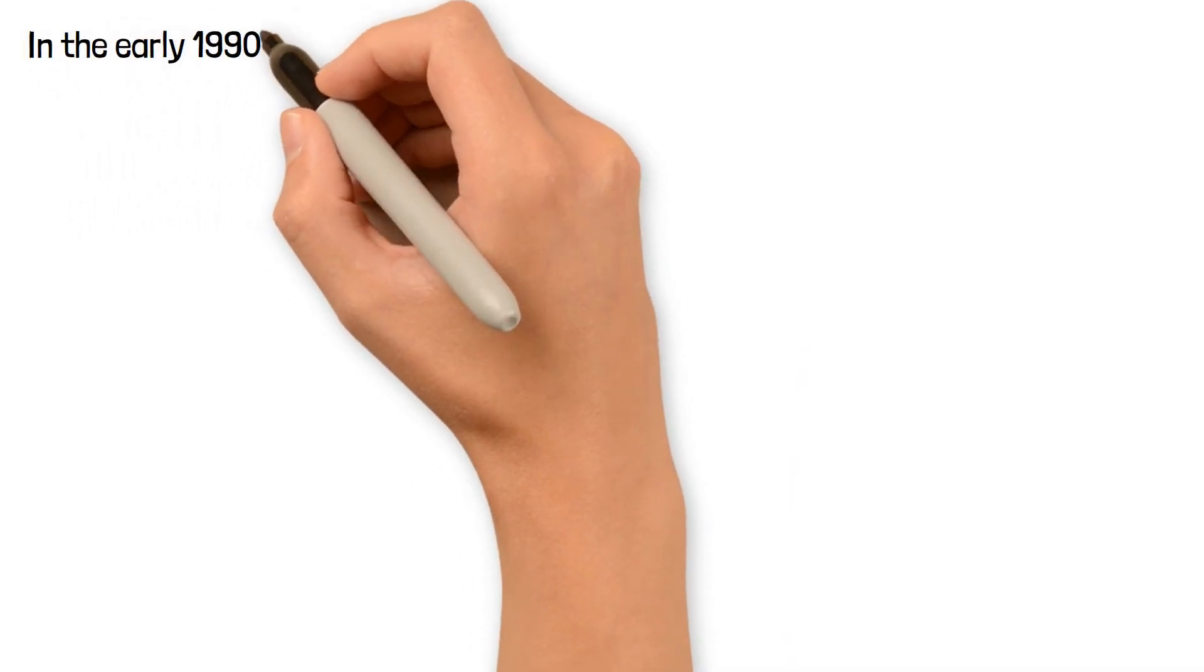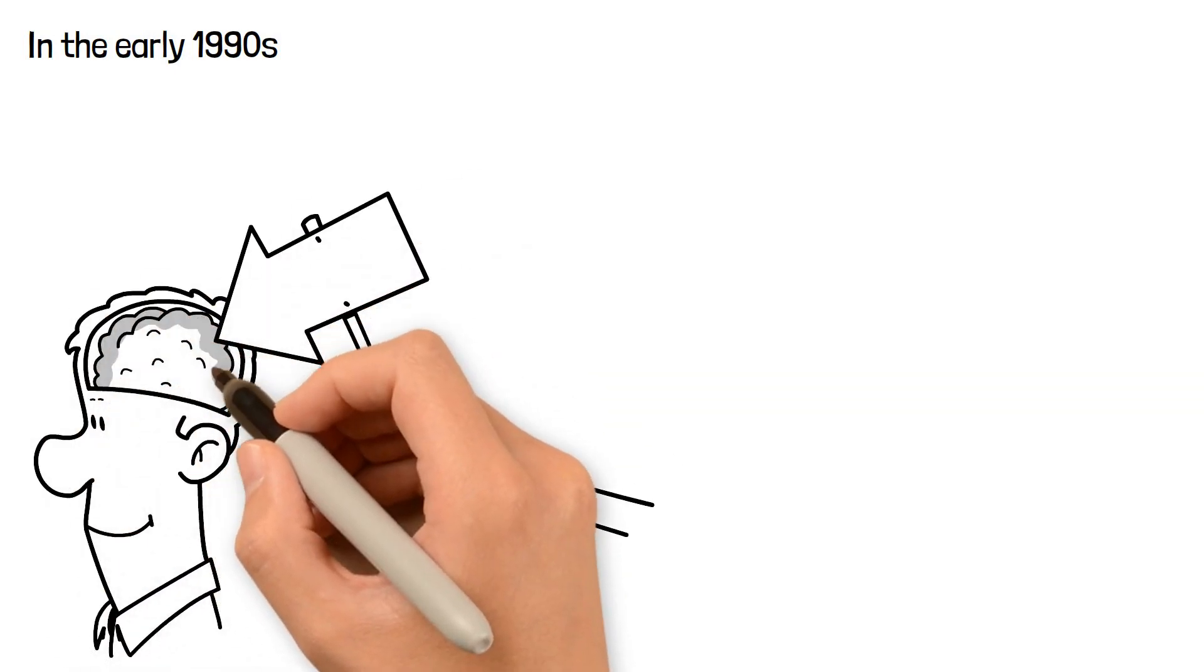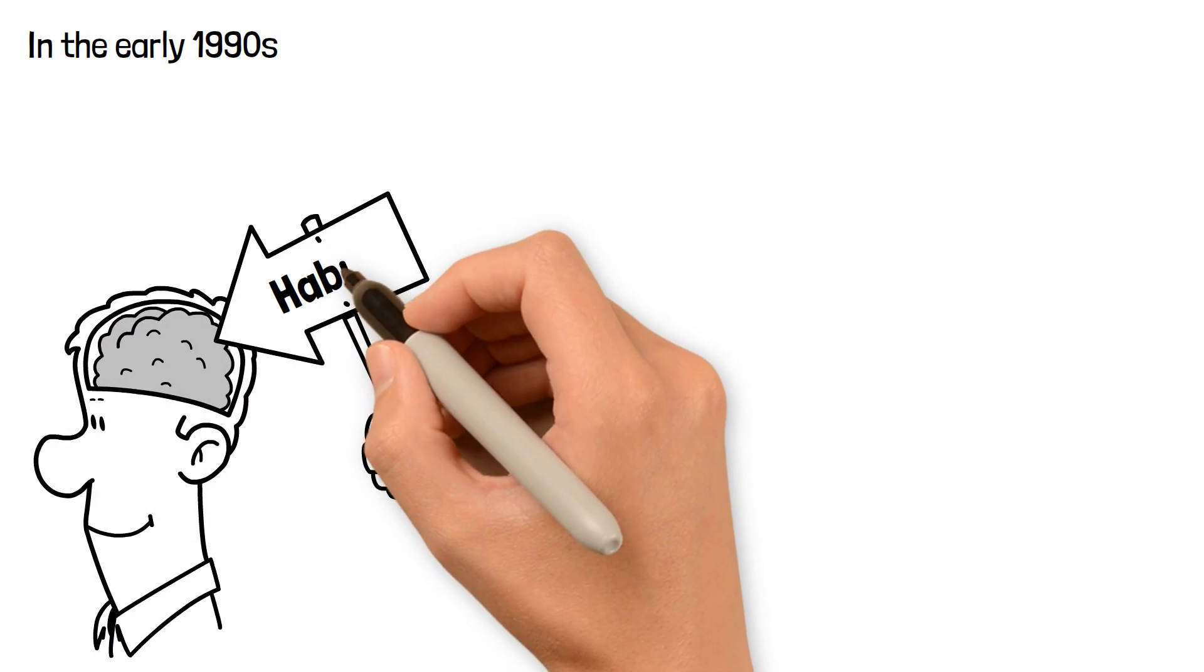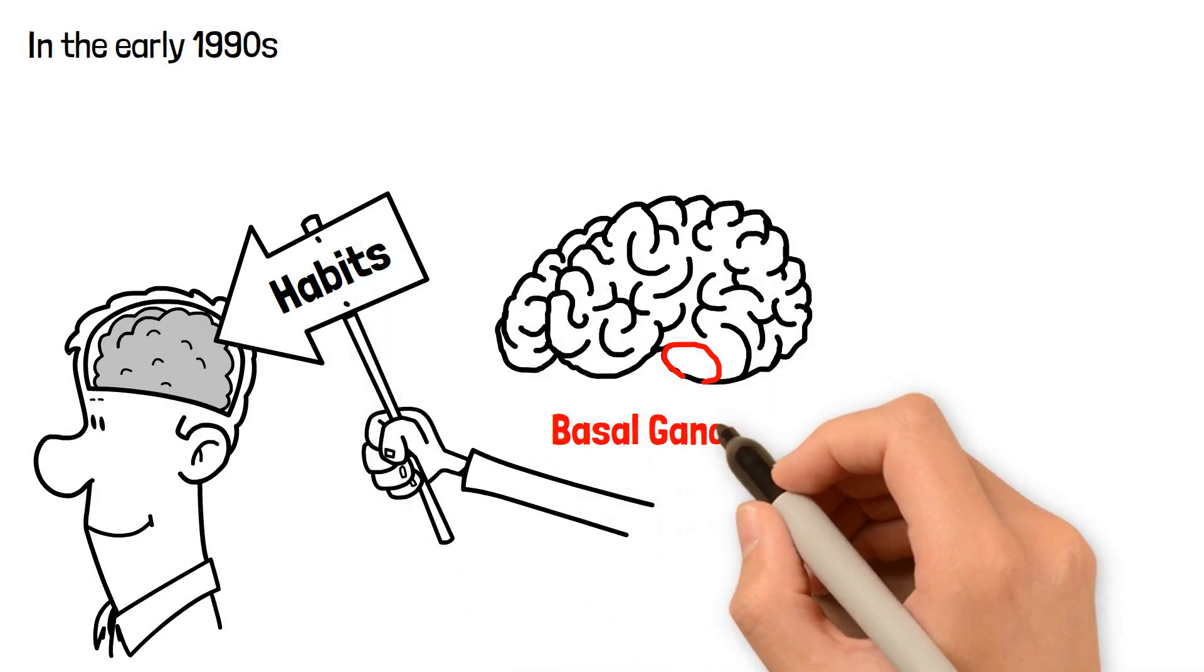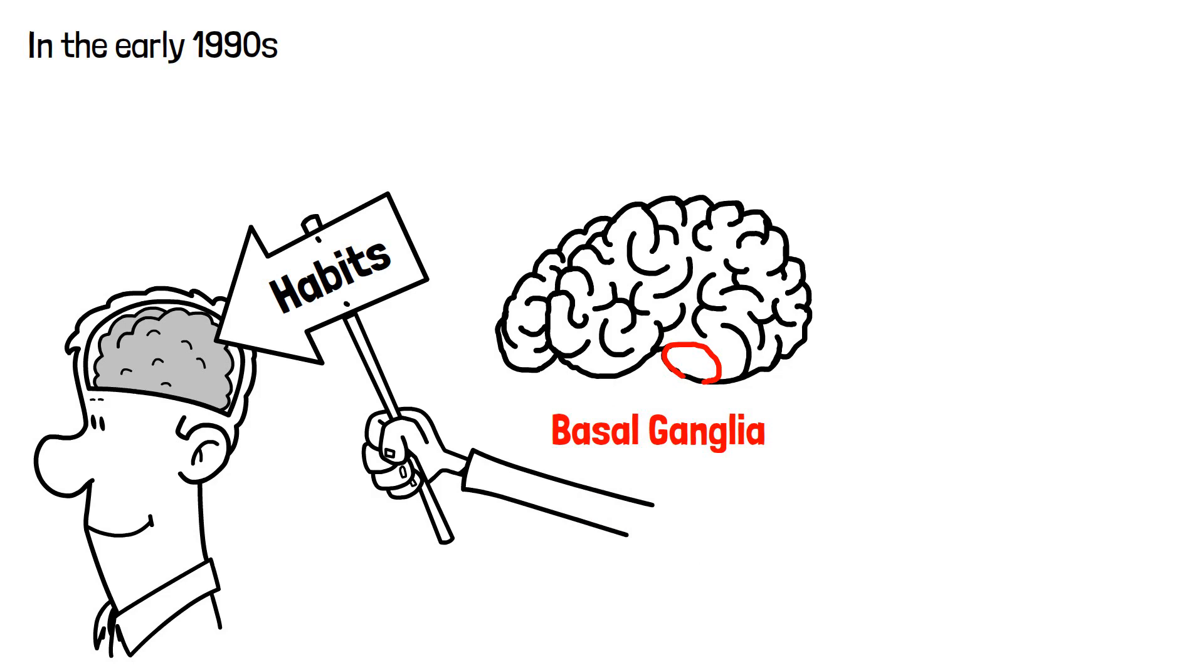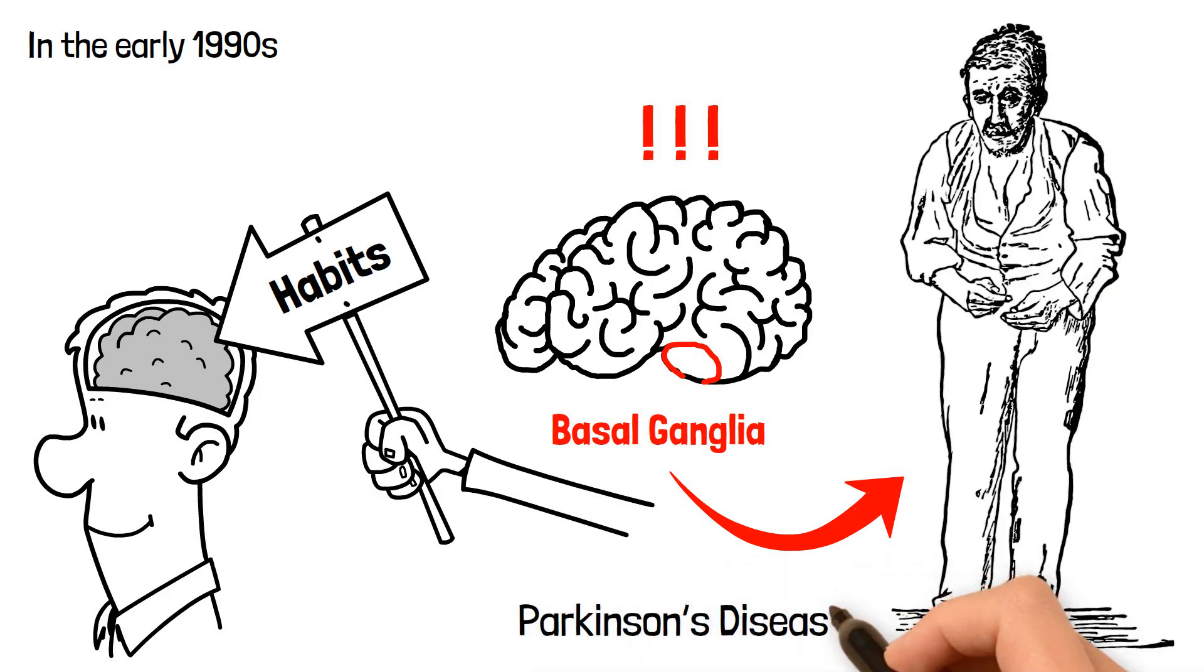In the early 1990s, MIT researchers began wondering which part of the brain was responsible for forming and storing habits. An oval-shaped tissue of cells called the basal ganglia was likely the answer, but not much was known about it except for a suspicion that it played a vital role in diseases as Parkinson's.